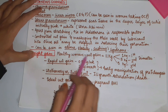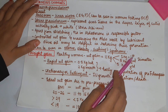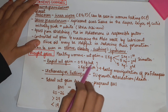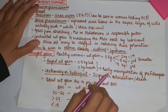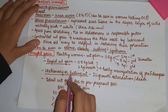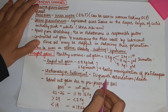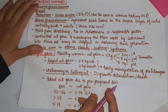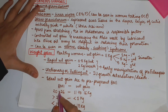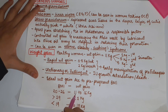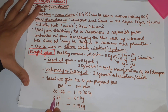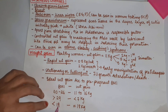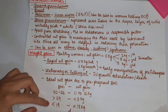Weight gain: in healthy women, weight gain is 11 kg — 1 kg in the first trimester, 5 kg in the second trimester, and 5 kg in the third trimester. Rapid weight gain of 0.5 kg per week or 2 kg per month is an early manifestation of preeclampsia. Stationary or falling weight indicates intrauterine growth retardation or death. Ideal weight gain by pre-pregnant BMI: BMI 20–26 should gain 11–16 kg; BMI more than 29 should not gain more than 7 kg; BMI less than 19 should gain at least 18 kg.